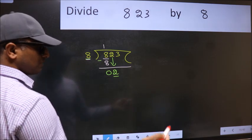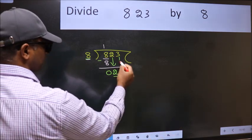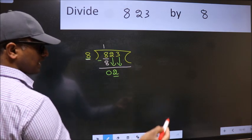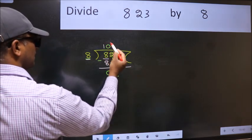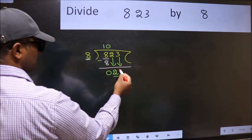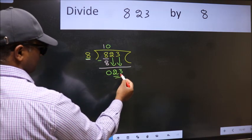So we should bring down the second number. And the rule to bring down the second number is put 0 here. Then only we can bring this number down. So 23.